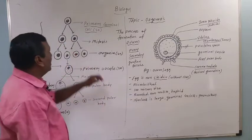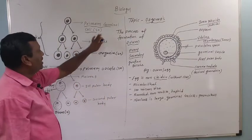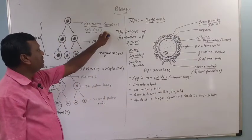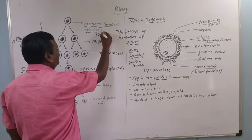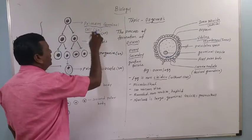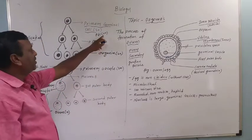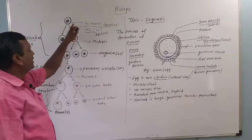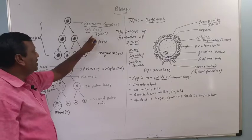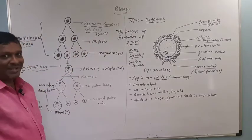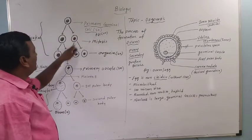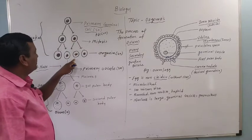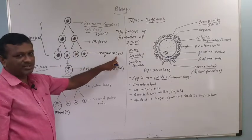First, in the multiplication phase, primary germinal cells — shortly PGC, meaning primary germinal cells — they are diploid in nature. These primary germinal cells undergo repeated mitosis and form oogonia, which are also diploid.